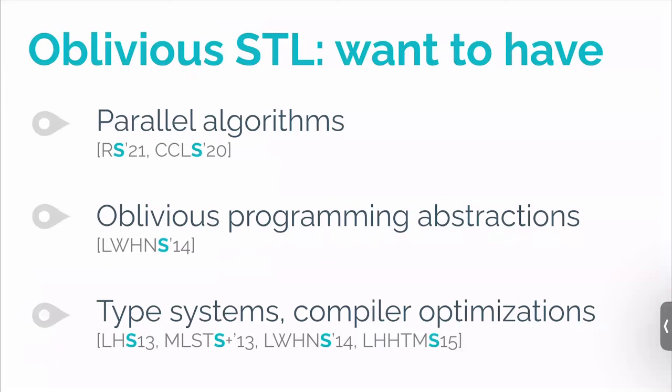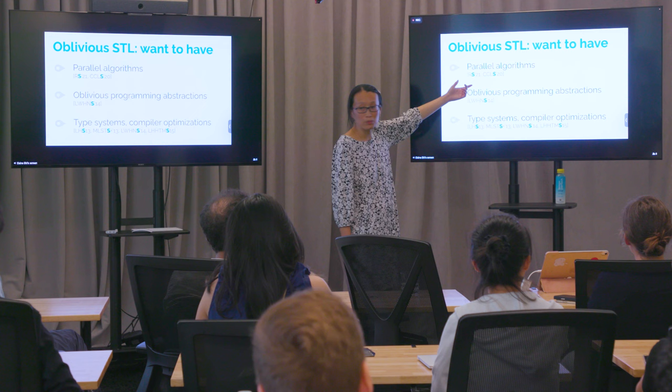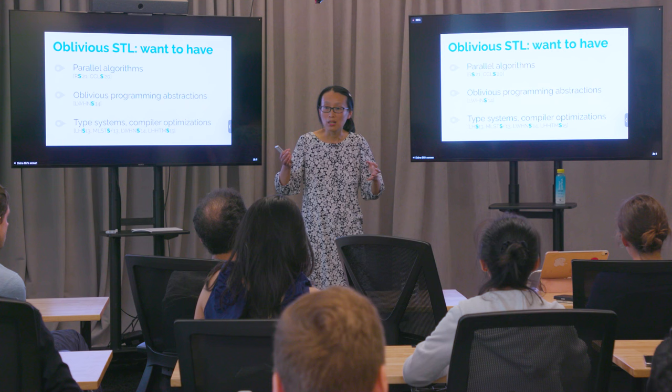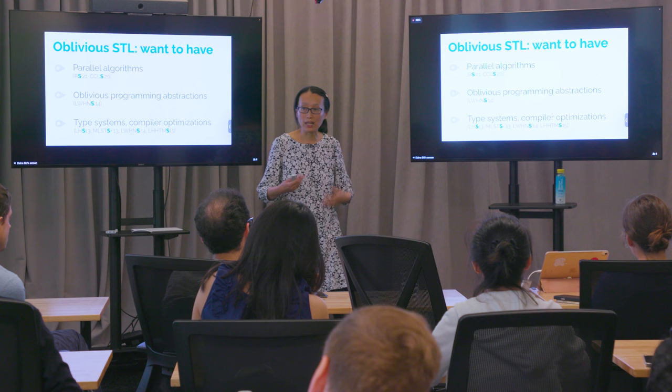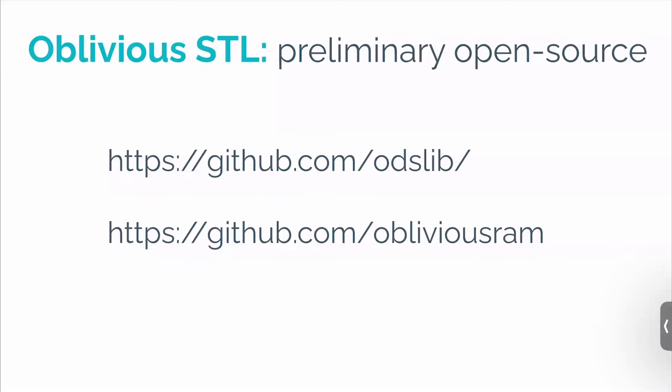Oblivious STL will overcome many of the challenges we face in deploying ORAM at large scale. In the medium term, we also want parallel versions of these algorithms and oblivious programming abstractions — if programmers use these abstractions, we can convert them to an oblivious counterpart much faster than generic ORAM. We have started working on Oblivious STL and want to scale up the effort. So far we've released an oblivious map, and our next step is to release oblivious sorting algorithms. There's preliminary open-source code available — the Oblivious STL at the first URL and reference implementations of ORAM algorithms at the second.